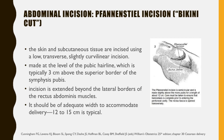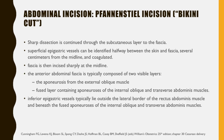For the Pfannenstiel incision, also called the bikini cut, the skin and subcutaneous tissue are incised using a low-transverse slightly curvilinear incision at the level of the pubic hairline, typically 3 cm above the superior border of the symphysis pubis. The incision is extended beyond the lateral borders of the rectus abdominis muscles and should be of adequate width to accommodate delivery of the fetus, typically 12 to 15 cm in length. Sharp dissection is continued through the subcutaneous layer to the fascia, and superficial epigastric vessels should be coagulated.